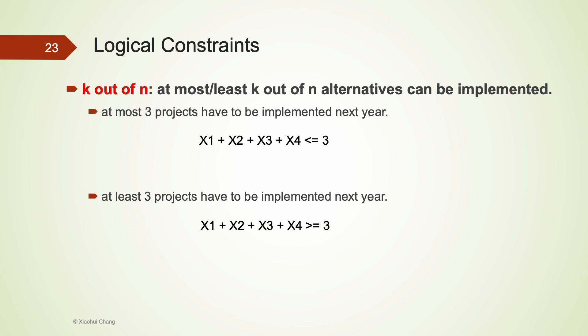The last logical constraint is called k out of n constraints. A generic statement is at most or at least k out of n alternatives can be implemented. For example, the company requires at most three projects to be carried out next year. So a constraint x1 plus x2 plus x3 plus x4 less than or equal to 3 is required for this condition. If the requirement is at least three projects to be implemented, then the sign of the constraint is changed to greater than or equal to.